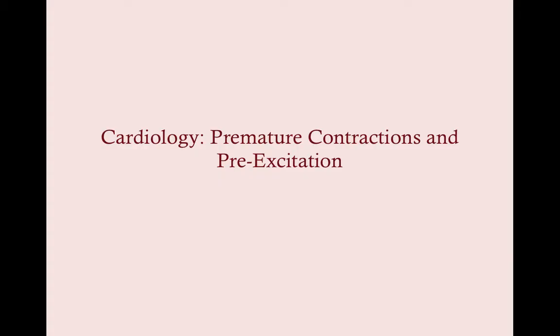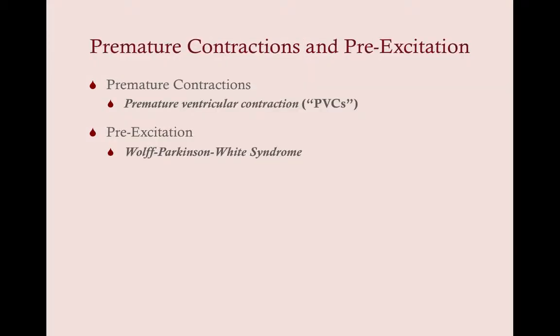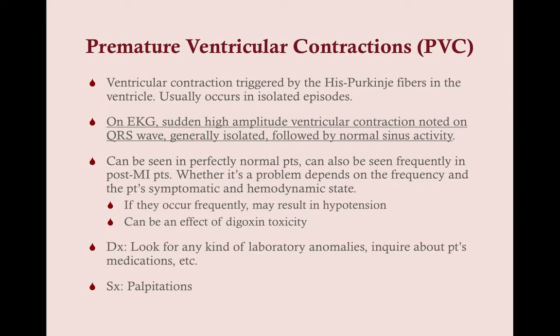Premature contractions and pre-excitation is another subset of arrhythmias. We're going to focus primarily on premature ventricular contractions. Normal conduction starts with the SA node conducting down through the atria, causing atrial depolarization which causes your P wave, then AV stimulation causes ventricular depolarization as it moves down the bundle branches, causing your QRS wave, and then the ventricles repolarize causing your T wave.